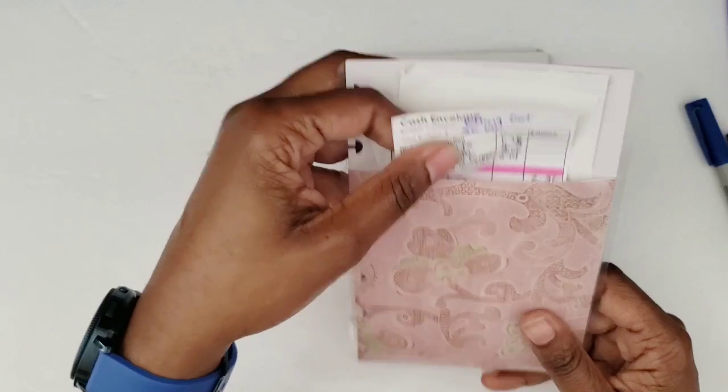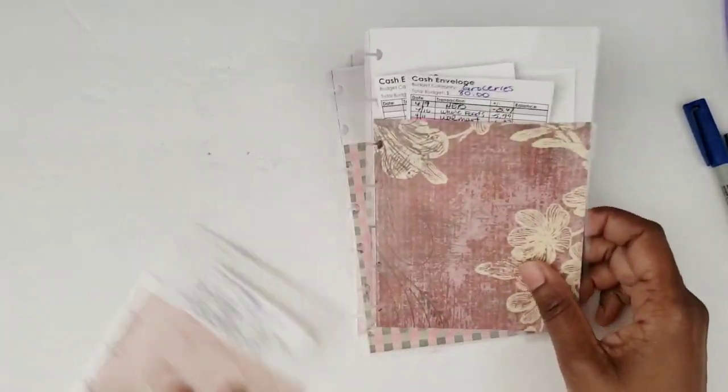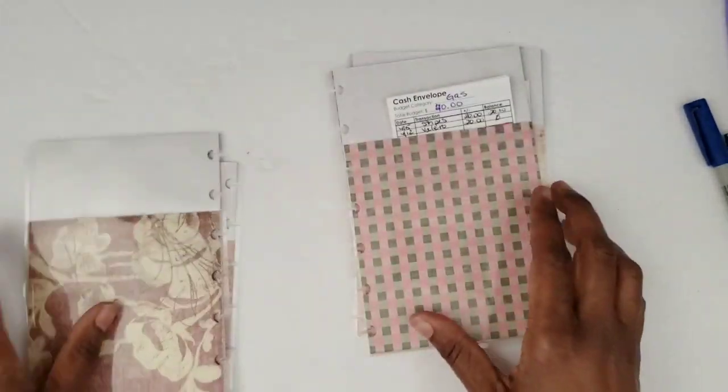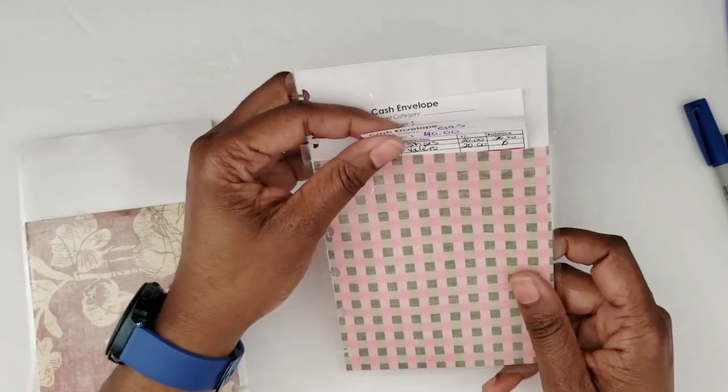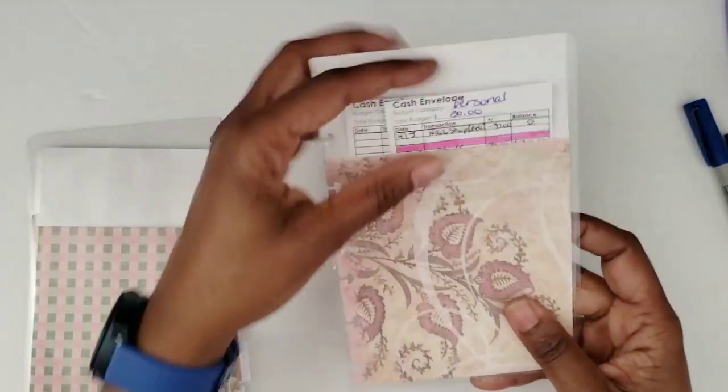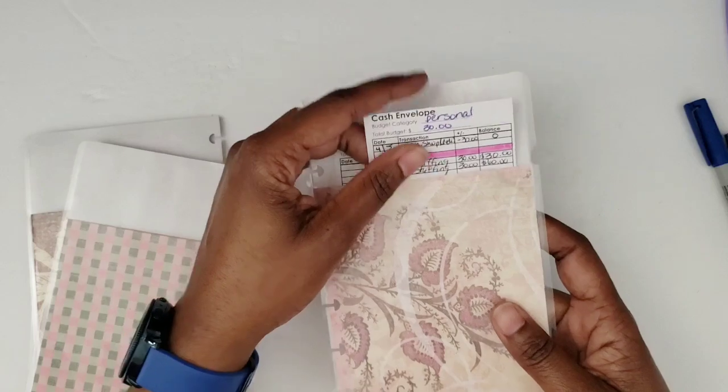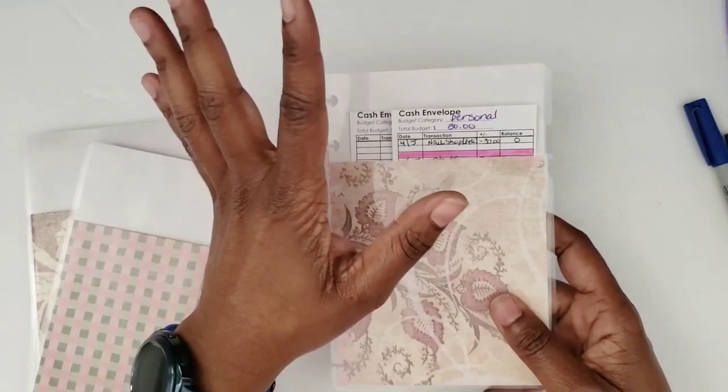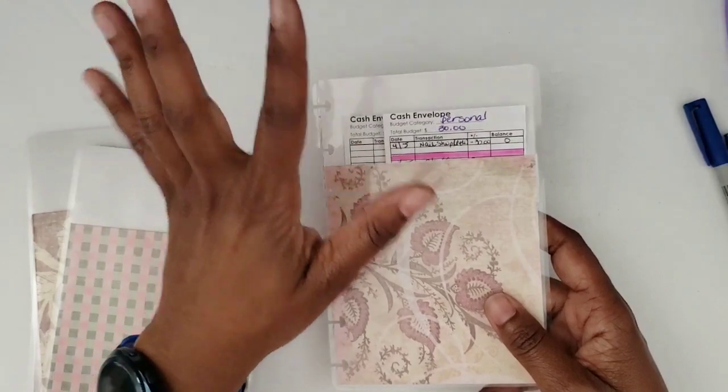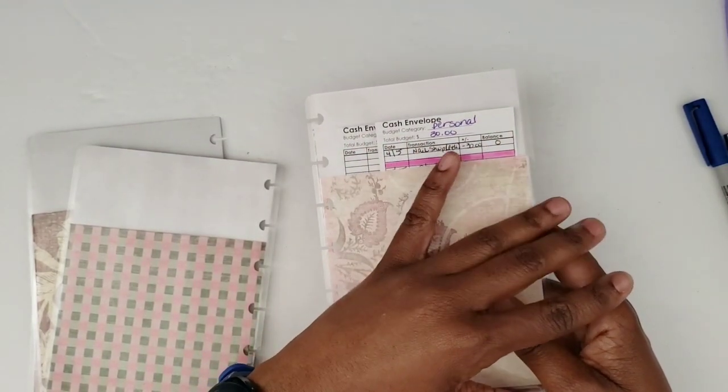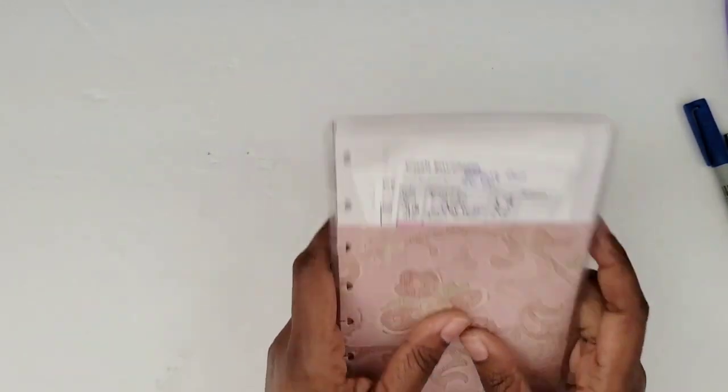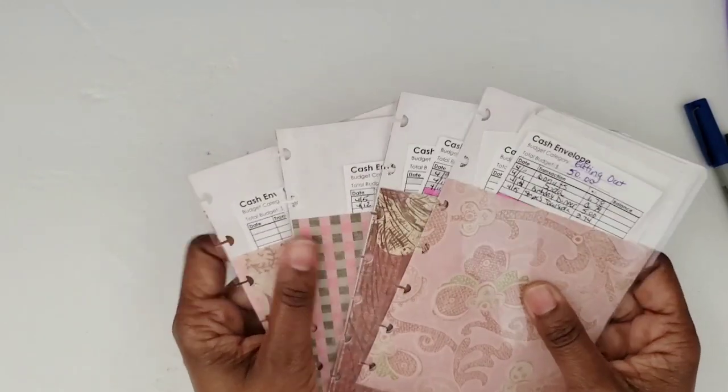We have eating out that's going to have fifty dollars for now, we have groceries which is going to have sixty dollars for now, gas which will have twenty because I already spent twenty, and then the personal has sixty bucks. I don't even think I could have taken from the personal instead of taking from the money that was in my bank that I didn't want to take from. I could have taken from the personal instead, but I forgot that I hadn't even spent that because I hadn't gone to get my pedicure. That tells you how much I do self-care.